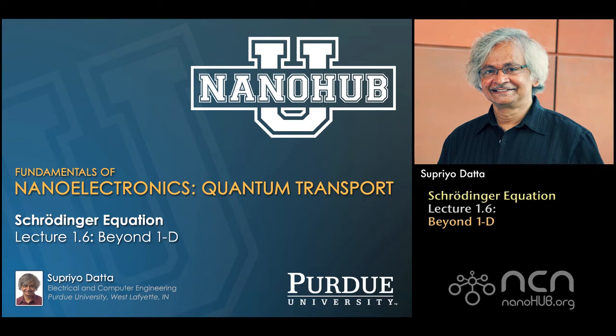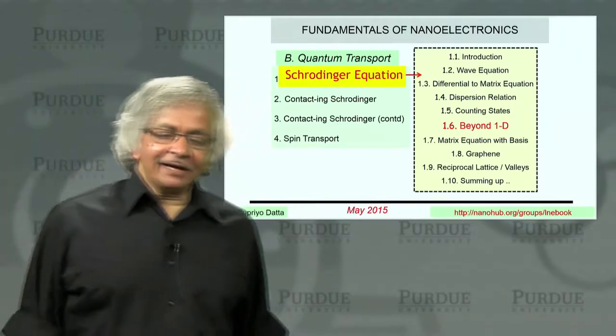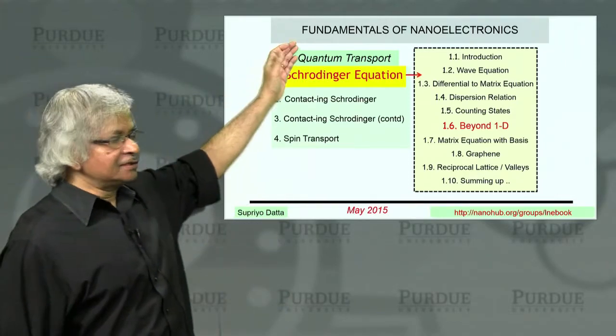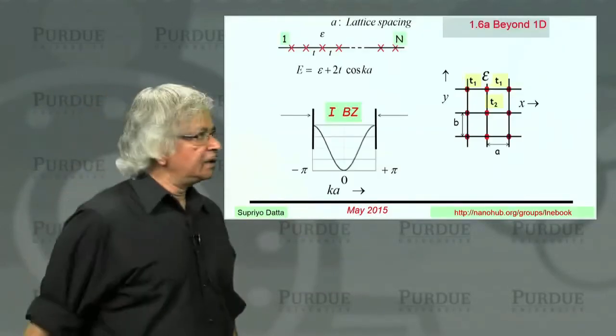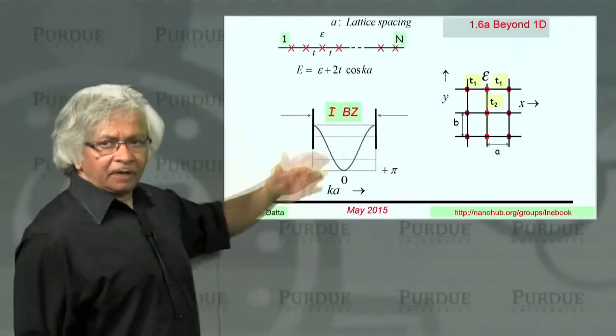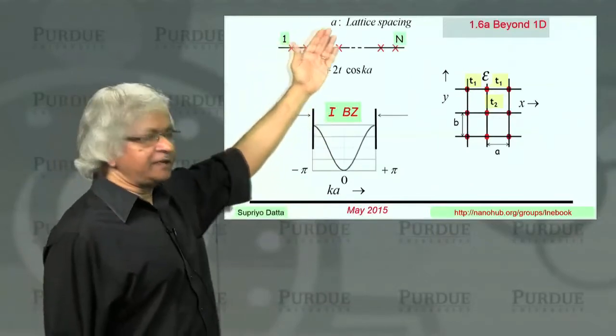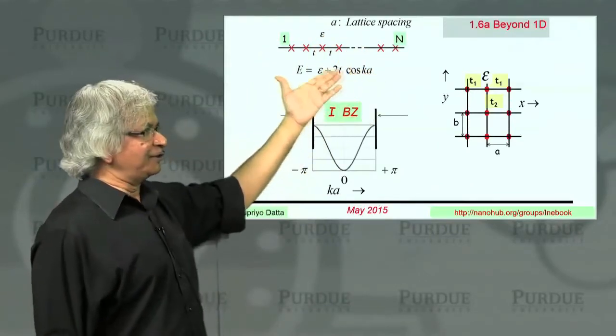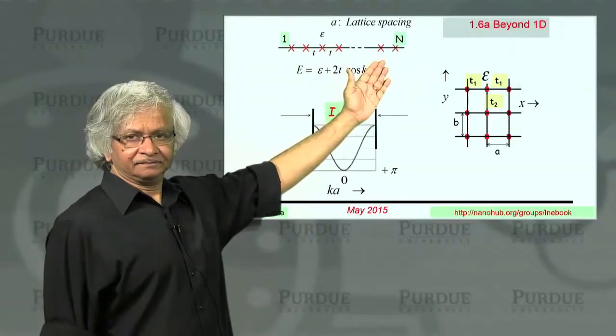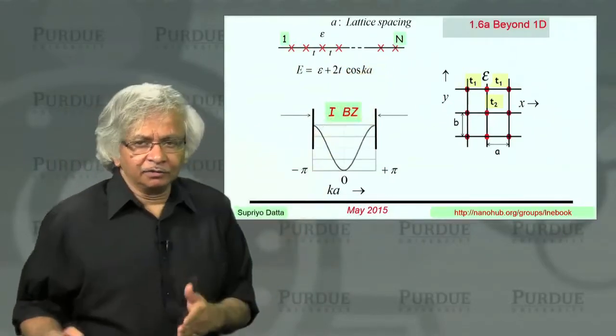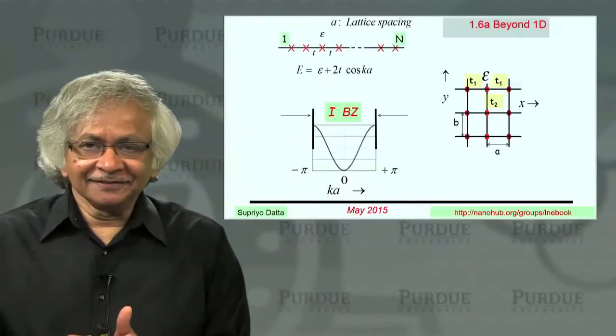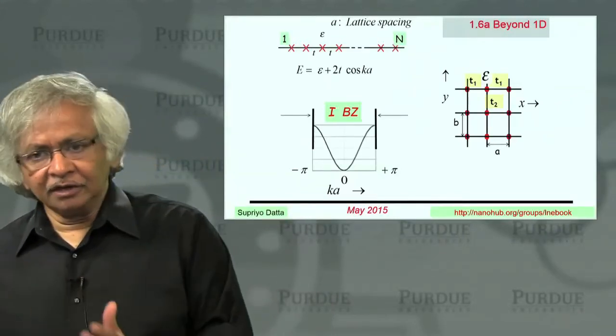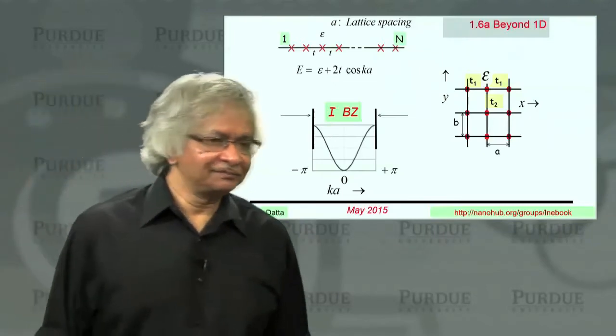Nanohub U, online instruction. Welcome back to Unit 1 of our course. This is the sixth lecture. So what we talked about in the last couple of lectures is how to write down the energy eigenvalues for this 1D solid. And what we now want to do is bring in a couple of additional complications, generalize the results so that we can do real solids.